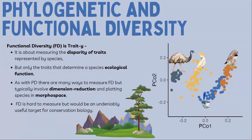The other index I want to talk about is functional diversity. If phylogenetic diversity is a tree measure, functional diversity is a trait-based measure. It attempts to measure the disparity of traits represented by a group of species — crucially, only traits that relate to the species' ecological role, like what it actually does in its environment, the niche it fills. Typically you take morphological measurements, apply some dimension reduction, plot species in morphospace, then summarise the distance between species or the area they occupy.